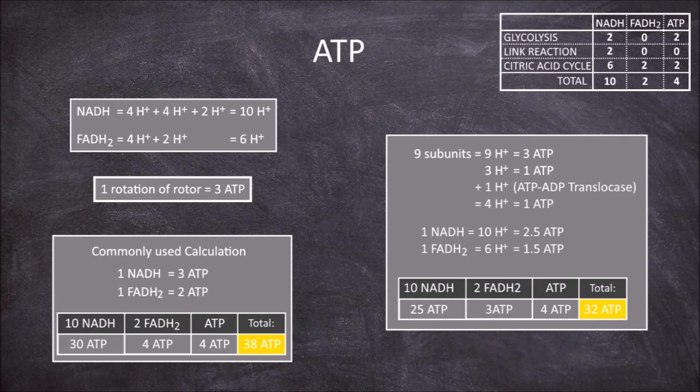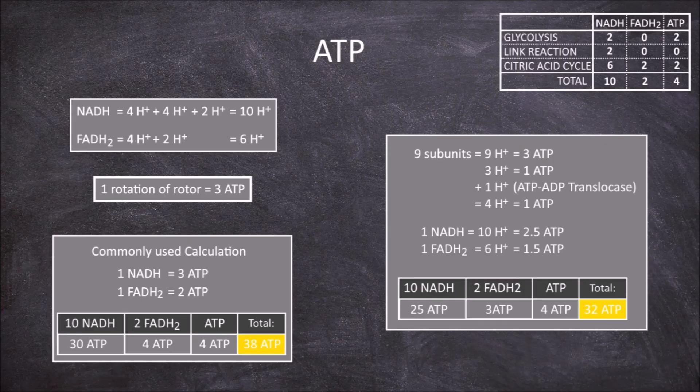Plus the 2 from glycolysis, and 2 from citric acid cycle, giving a total of 38 ATP for each molecule of glucose.